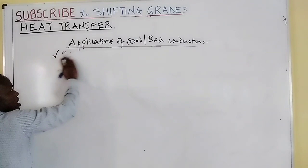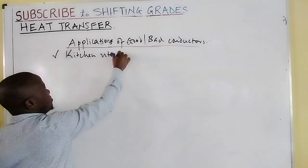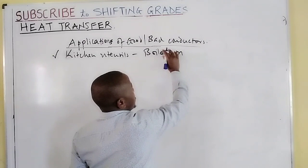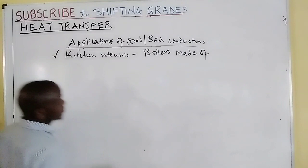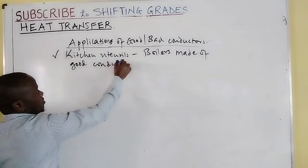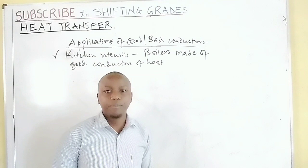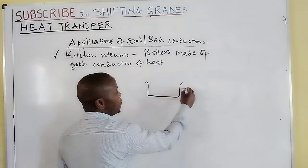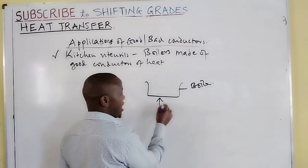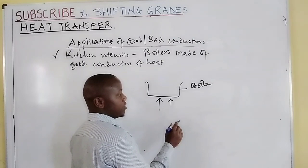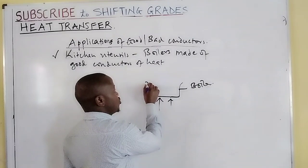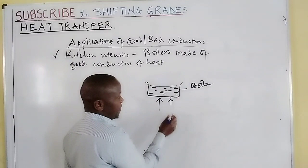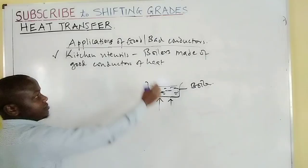In the home, in the kitchen — in the kitchenware, in the kitchen utensils — we have boilers. Boilers are made of good conductors of heat, so that when you supply heat to these utensils which are used to boil water or heat other substances, that heat will be transmitted to the other parts. If you have a boiler and you are supplying heat, it should be made of good conductor material, so that once you apply heat, the heat can be distributed very fast to all parts, and the water inside can receive heat from all parts, not just at one point.